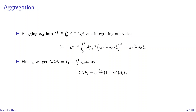GDP is aggregate output minus the intermediate inputs used in the final goods sector, so we subtract the integral over all X_it with respect to i. This gives a GDP expression at time t similar to the one-sector model. Combining Y_it and subtracting the intermediate input integral — both involving average productivity — simplifies the two expressions to a coefficient of 1 minus alpha squared times average productivity and labor.